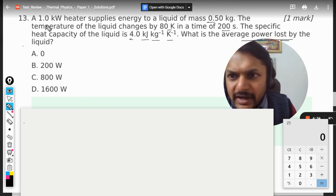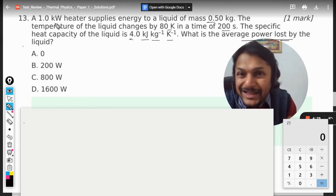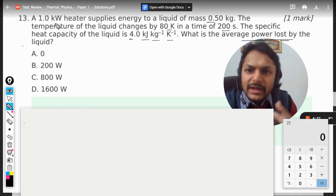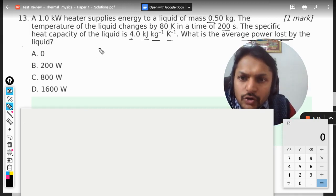So what is the power given by the heater? It is one kilowatt. Let us see how much is the power that was consumed by the liquid to increase its temperature by 80 kelvin.